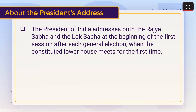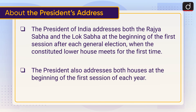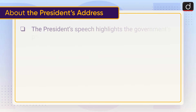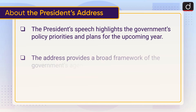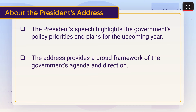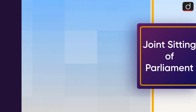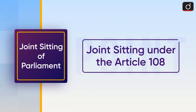The President addresses both the Rajya Sabha and the Lok Sabha at the beginning of the first session after each general election, when the constituted lower house meets for the first time. The President also addresses both houses at the beginning of the first session of each year. The President's speech highlights the government's policy priorities and plans for the upcoming year, providing a broad framework of the government's agenda and direction.